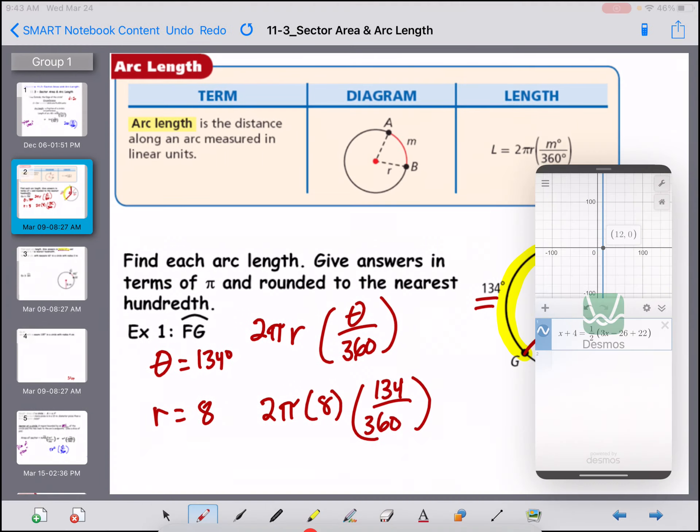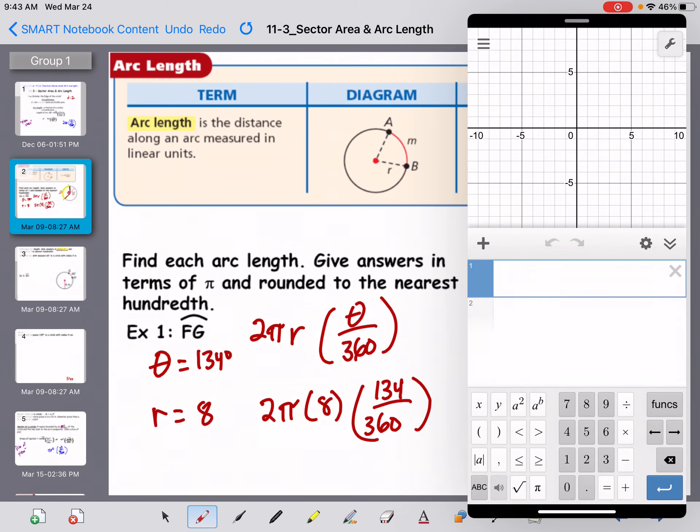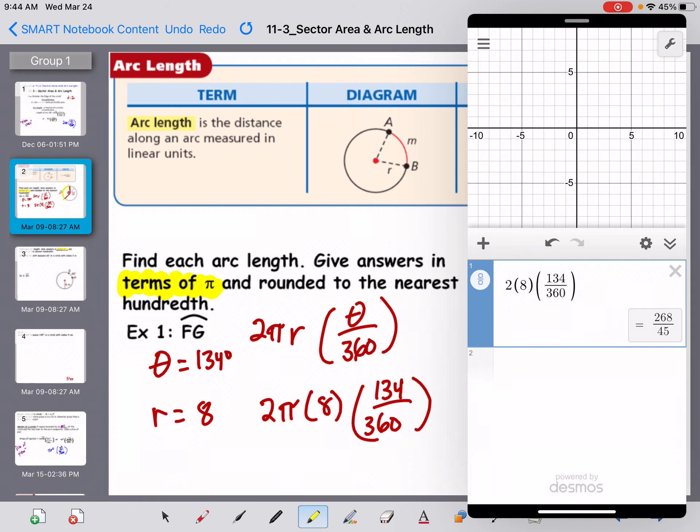So in my handy dandy calculator, I'm going to say, so it wants it in terms of pi. So that means we type all of the buttons in, except for the pi. So we're going to leave the pi out the first time. And then another parenthesis, 134, 360. And then let's go over here. So once I kind of get this set up, I'm just going to leave it like this over and over. I want it to be in a fraction.